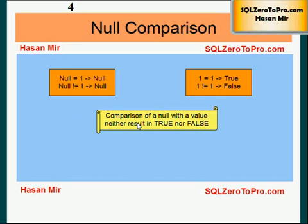Null cannot really be compared with other values. A comparison of null with a value neither results in true nor results in false. If you focus on the top left box here: null equals 1 results in null — it's not going to result in false. Null not equal to 1 also results in null. Compare that with a normal condition: 1 equals 1 results in true, and 1 not equal to 1 results in false.